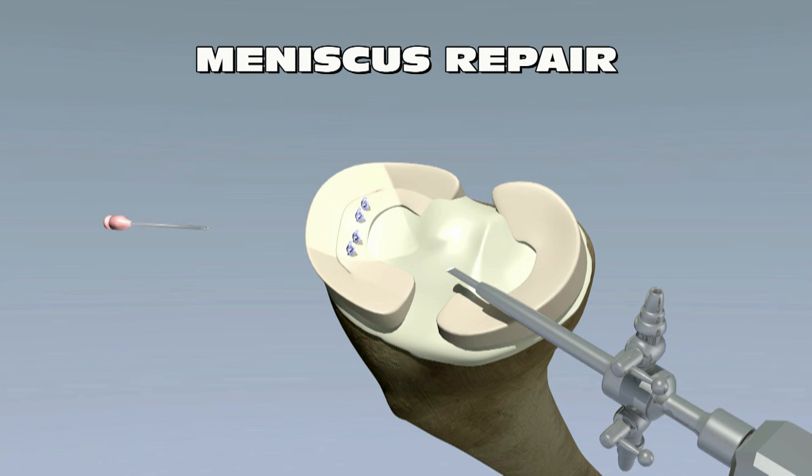If the blood supply to the torn part of the meniscus is poor, attempting to repair the tear is useless. This is because the nutrients needed for healing cannot reach the tear.